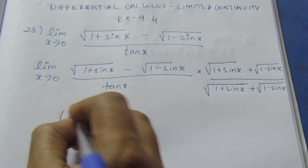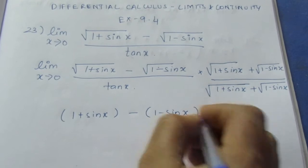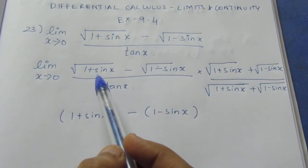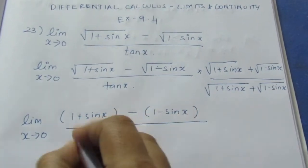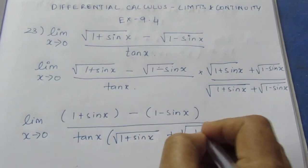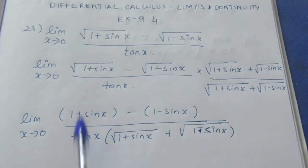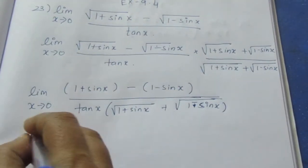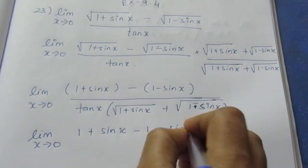A squared is (1 plus sin x) minus (1 minus sin x). We cancel the square roots. So the numerator becomes: limit x tends to 0, and the denominator is tan x into root of (1 plus sin x) plus root of (1 minus sin x). Expanding further: 1 plus sin x minus 1 plus sin x.